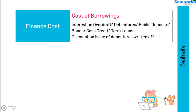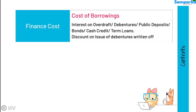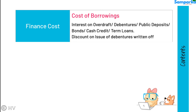Finance cost indicates the cost of borrowings. It may include interest on overdraft, debentures, public deposits, bonds, cash credit, term loans, and discount on issue of debentures written off.